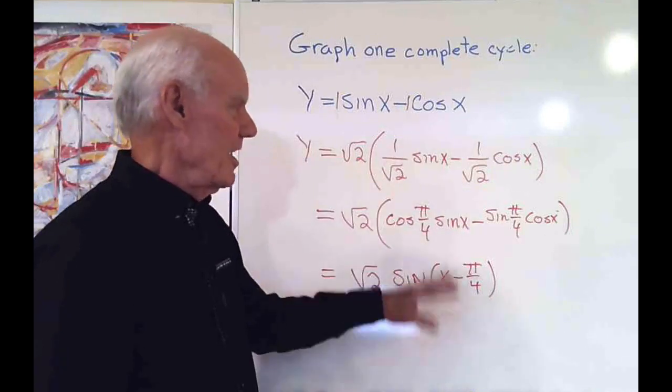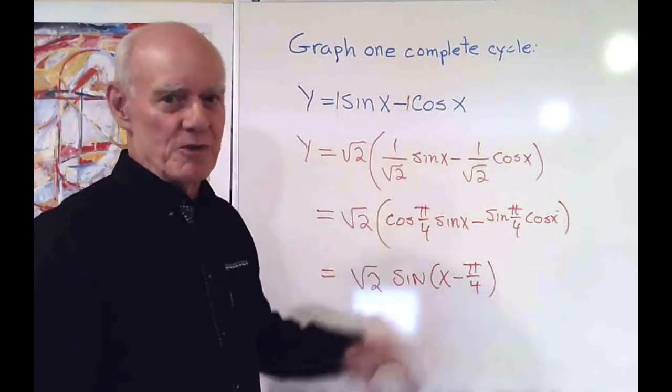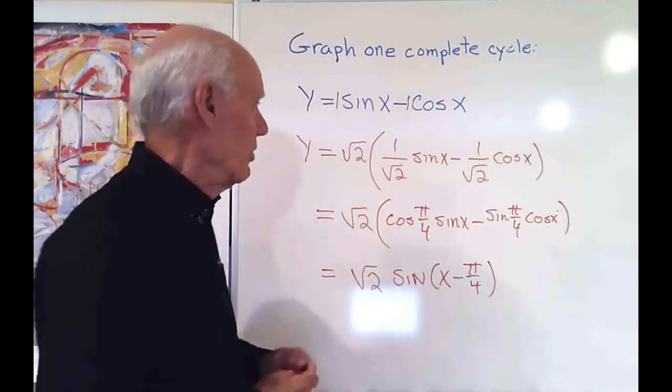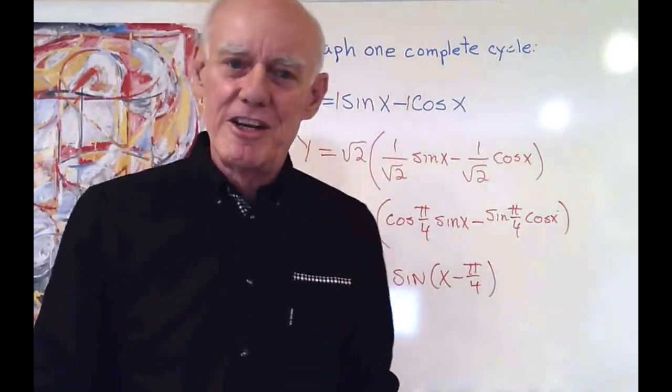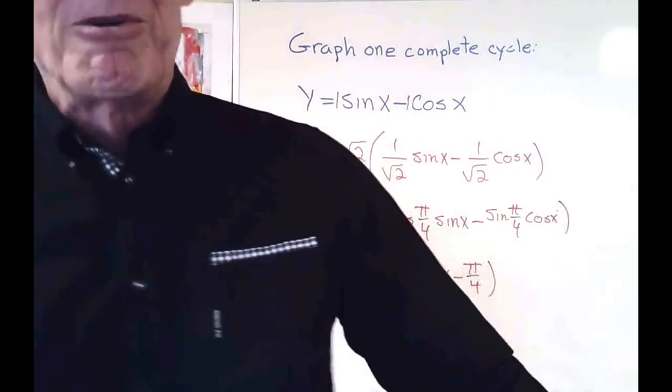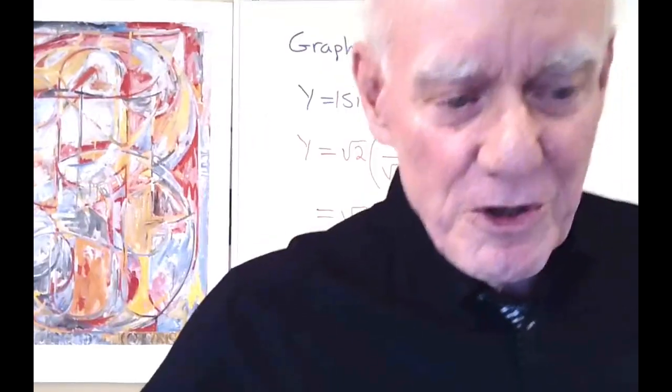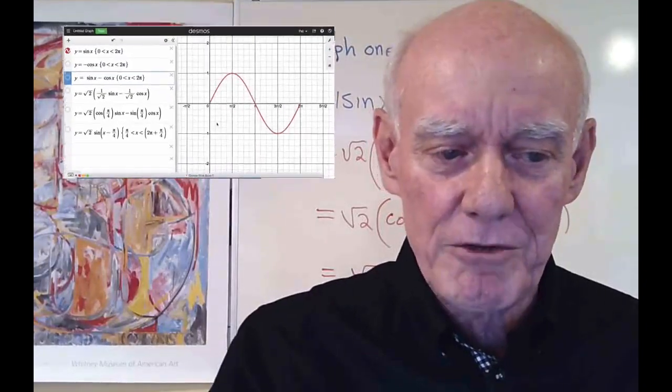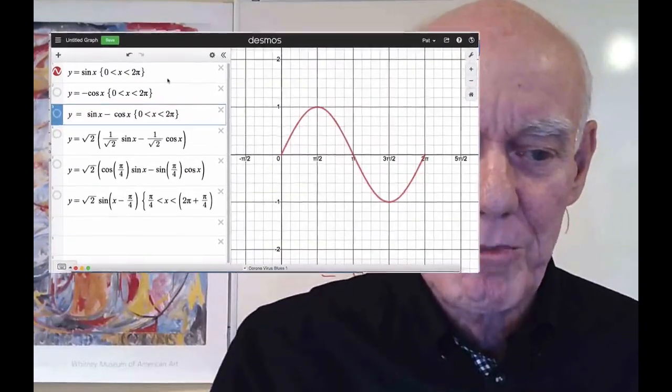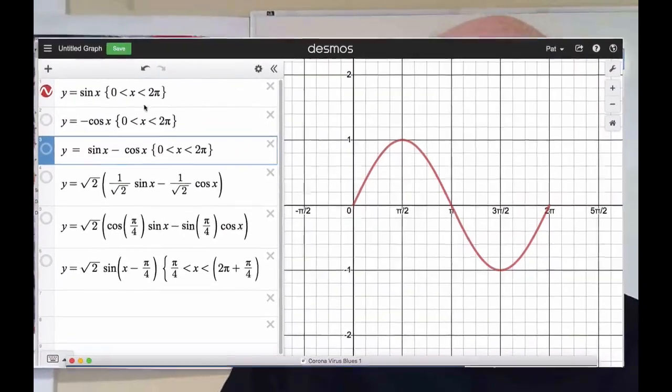But instead of doing that by hand, what I want to do is go to Desmos right now and see what it looks like when we graph each of these things individually so you can get a better idea of how this works. So here I have Desmos and I've graphed y equals sine x and I've restricted the graph to go between zero and two pi.